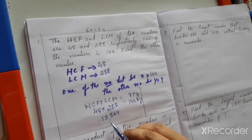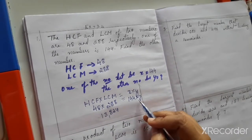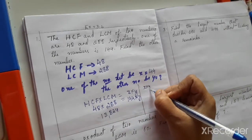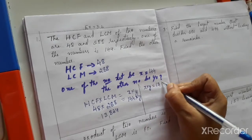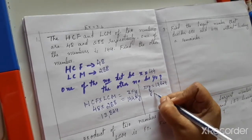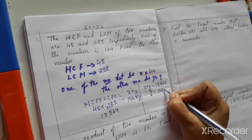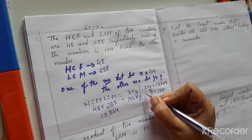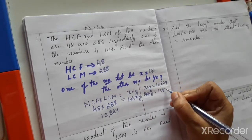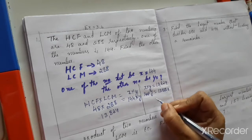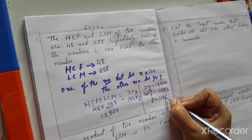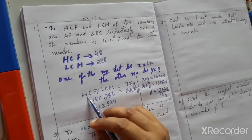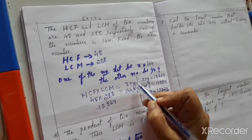Here, 13824 means after multiplying the two numbers we must get 13824. So y = 13824 ÷ x. The x value is 144, so 144 × y = 13824. Therefore y = 13824 ÷ 144.